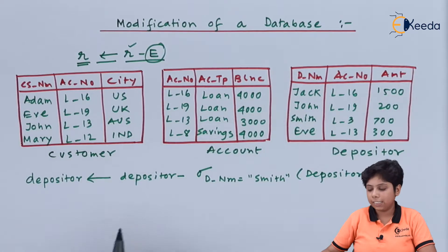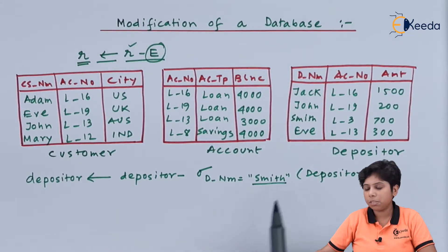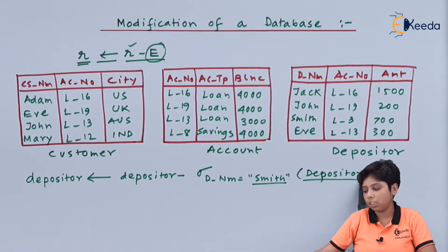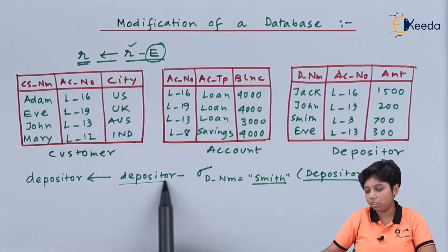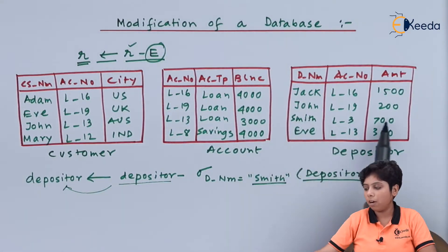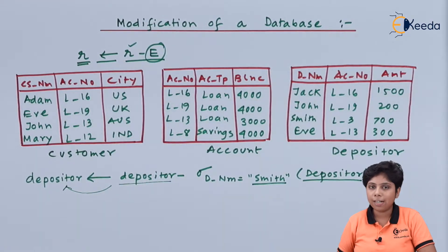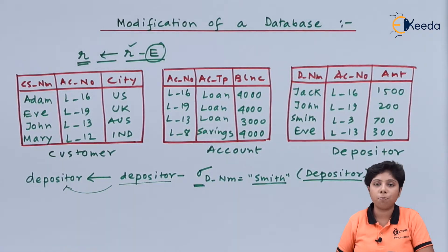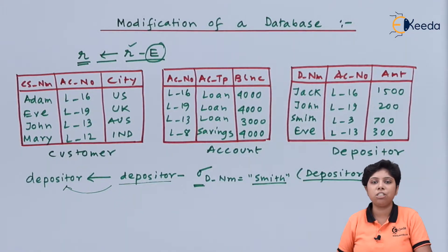Firstly, we are deleting a record — that is the depositor name Smith and all the records of Smith from the relation depositor — and we are updating the relation depositor with the new deleted result. The deleted output will be all records without the Smith record. This is one example of deleting a particular record based on a predicate using a delete operation on a single relation. Here you can see that we are using the selection operation with a predicate to select which record we need to delete.